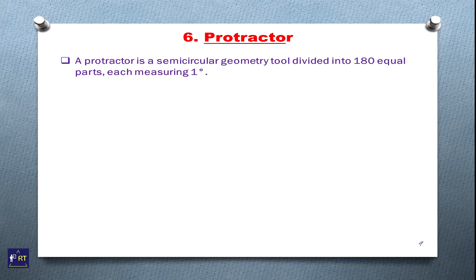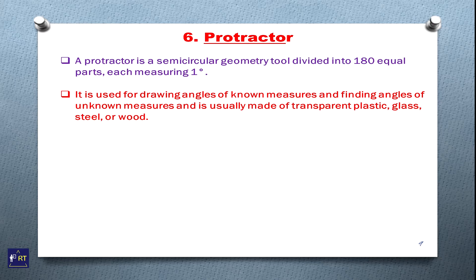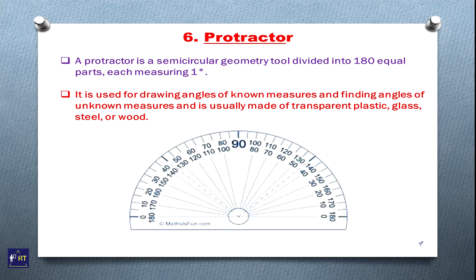Next, protractor. A protractor is a semicircular geometry tool divided into 180 equal parts, each measuring 1 degree. It is used for drawing angles of known measure, finding angles of unknown measure, and is usually made of transparent plastic, glass, steel, and wood. This is the image of protractor.